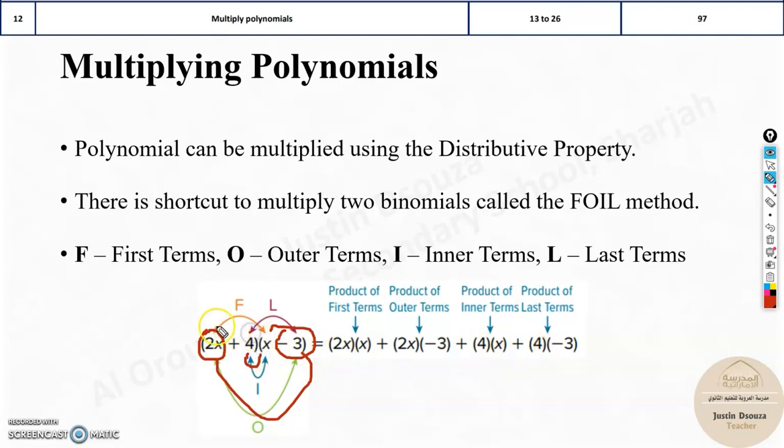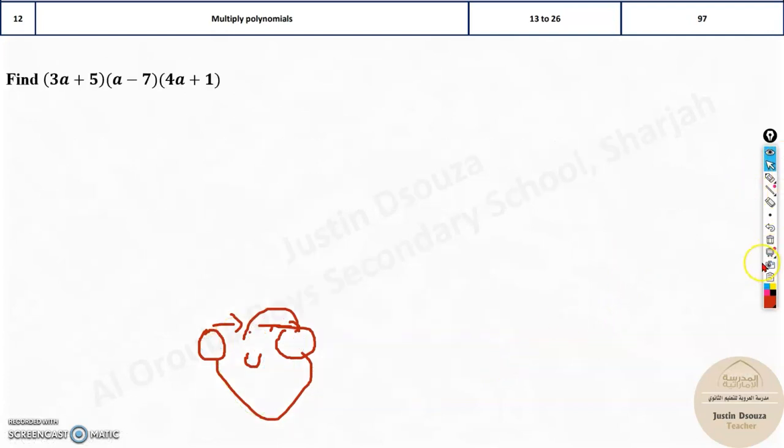And the last terms are, this is the last of the first binomial, last of the second binomial, 4 times negative 3. That is it. Simplify and you will get the answer. So this is the FOIL method. You can use FOIL method, distributive method. It is ultimately the same thing. Your answer will be the same.